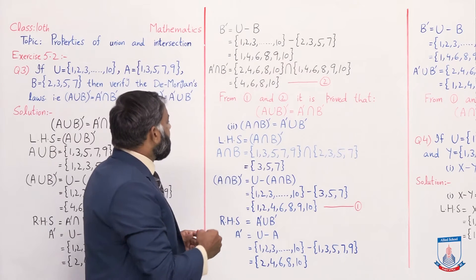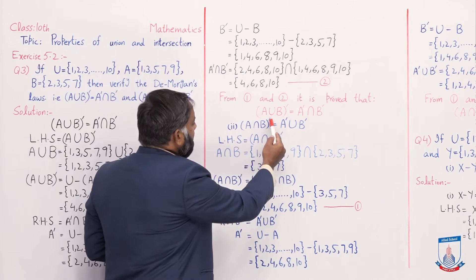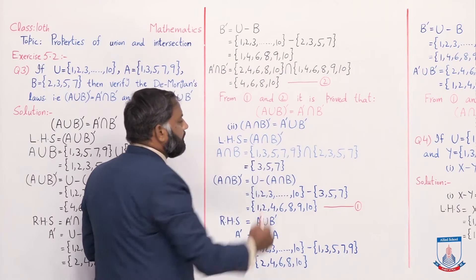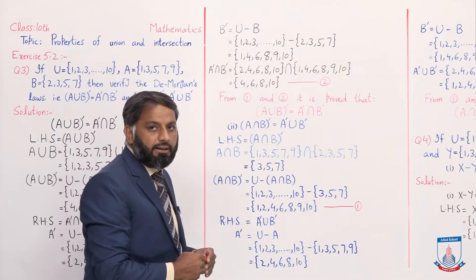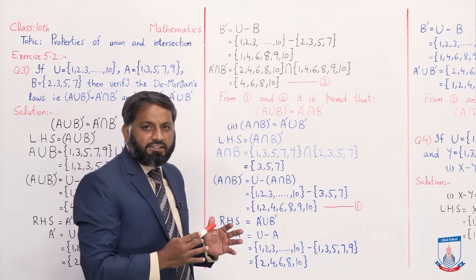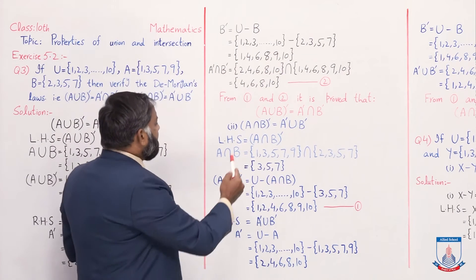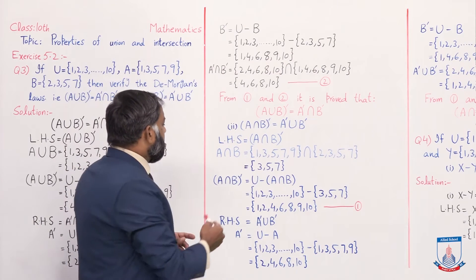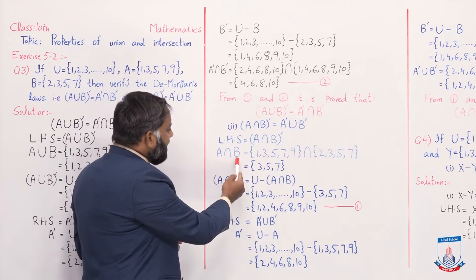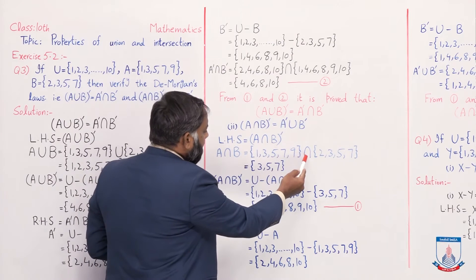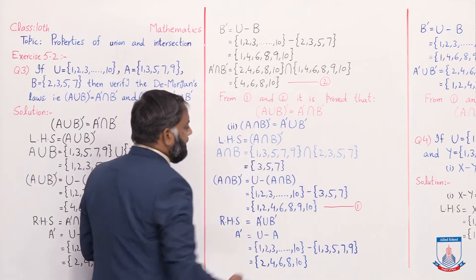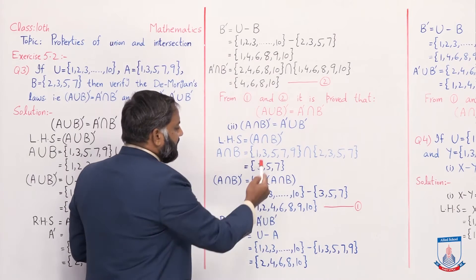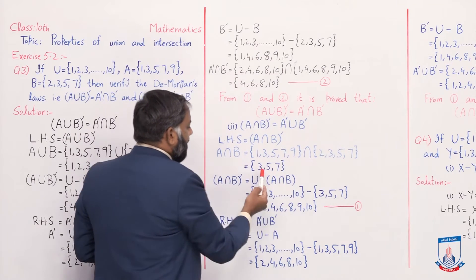Now the second De Morgan's Law is (A∩B)' = A'∪B'. Here also we first solve the left hand side: (A∩B)'. First we find A∩B: set A intersection symbol set B. The common elements of both sets are three, five, seven. So A∩B = {3, 5, 7}.